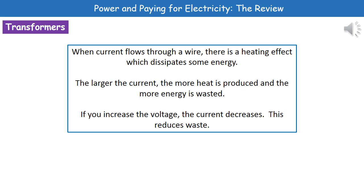When current flows through a wire, we get a heating effect, which means some electrical energy dissipates into the surroundings. The larger the current, the more heat we produce, and therefore the more energy we waste. However, if we increase the voltage, we decrease the current — so by having a higher voltage, we've reduced the current, reduced the heating effect on the wire, and therefore reduced the waste.